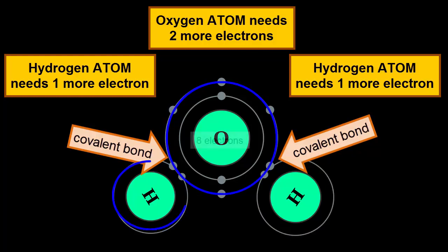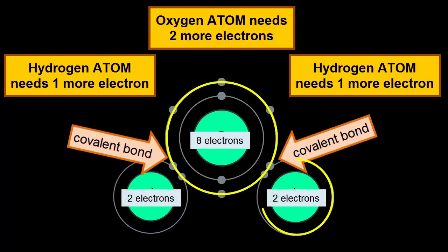The result? There are eight total electrons orbiting the oxygen in its outer shell, and two electrons orbiting each hydrogen in its outer shell. All atoms have filled outermost shells, and the molecule is chemically stable.